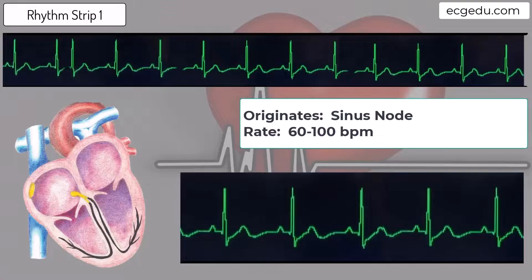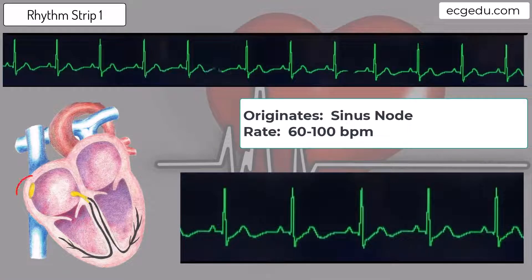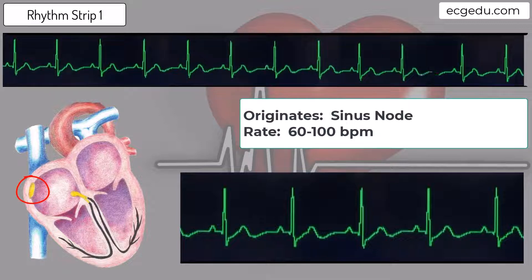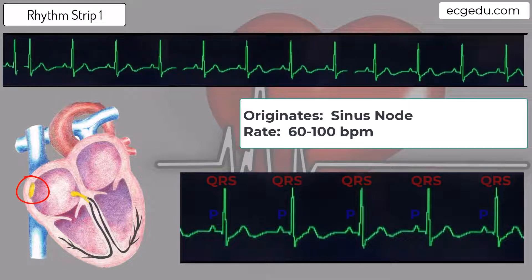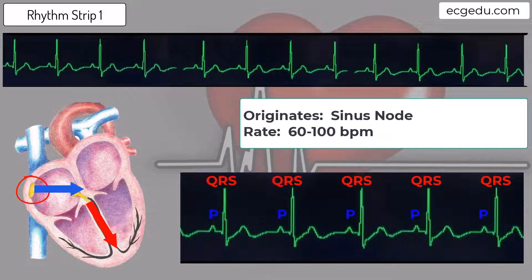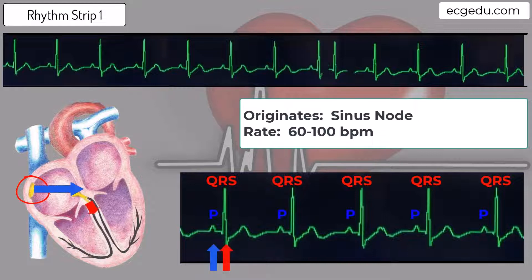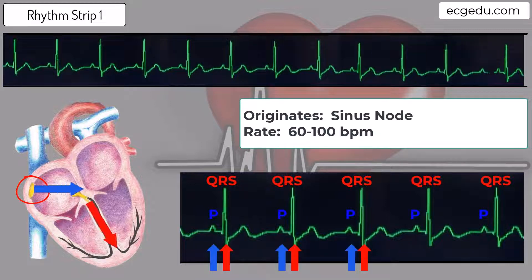This rhythm is Normal Sinus Rhythm. Normal Sinus Rhythm originates from the sinus node and beats at a rate between 60 and 100 beats per minute. There are regular P-waves followed by normal, narrow QRS complexes — PQRS, PQRS, PQRS, and so on.